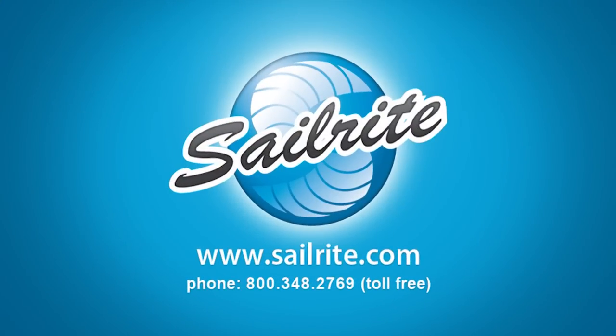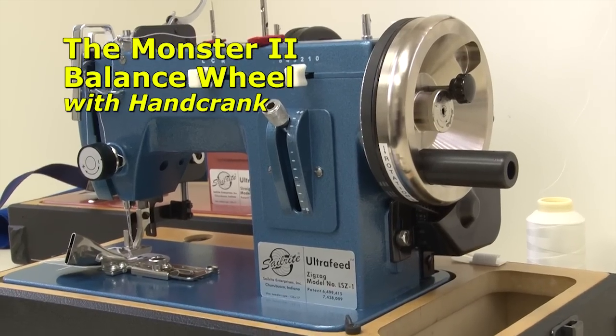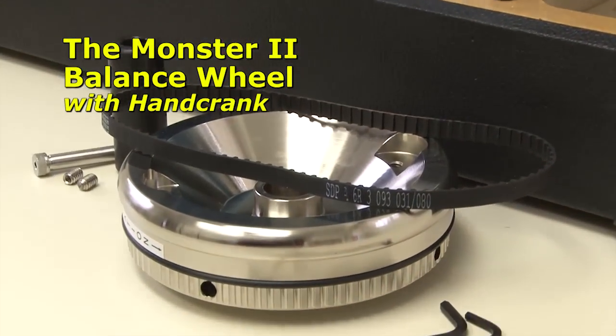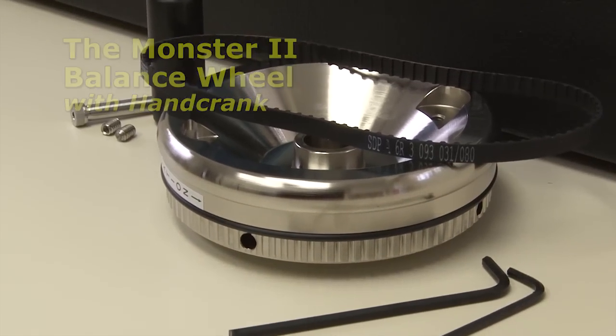This video is presented by Sailrite. Introducing the Monster 2 balance wheel with hand crank. The Monster 2 balance wheel will fit on any Ultrafeed sewing machine and also includes the posi pin hole.